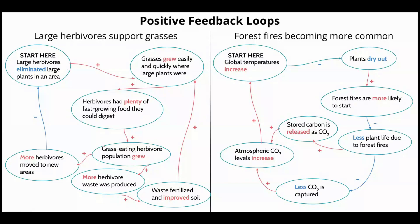This video will explain how to read these diagrams that show feedback loops. Each feedback loop has a few different features. The ovals describe steps in a process in the world that either happened long ago or is happening today. A timeline, not shown here, places each feedback loop in a historical context.